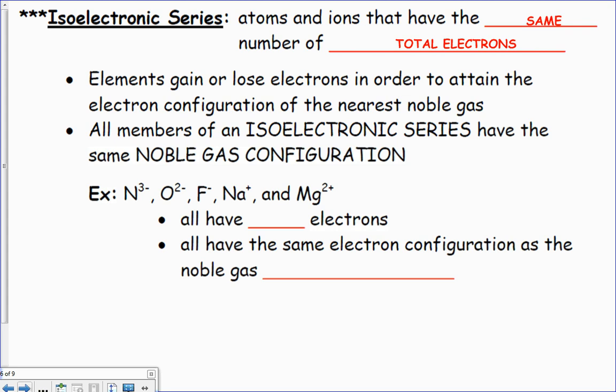Oxygen has eight electrons; if I'm at minus two, I have ten total electrons. Fluorine has nine electrons; if I'm at minus one, I now have ten.